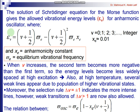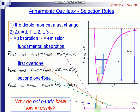Substituting the Morse potential into the Schrödinger equation gives the energy expression in cm⁻¹, involving the equilibrium vibrational frequency ωₑ and the anharmonicity constant xₑ. The vibrational quantum number v takes integer values 0, 1, 2, 3. The anharmonicity constant is around 10⁻², and the oscillating frequency decreases with increasing vibrational quantum number.